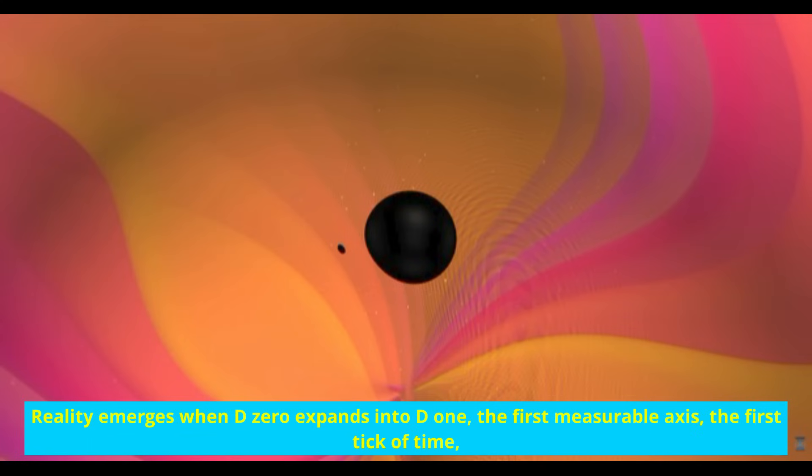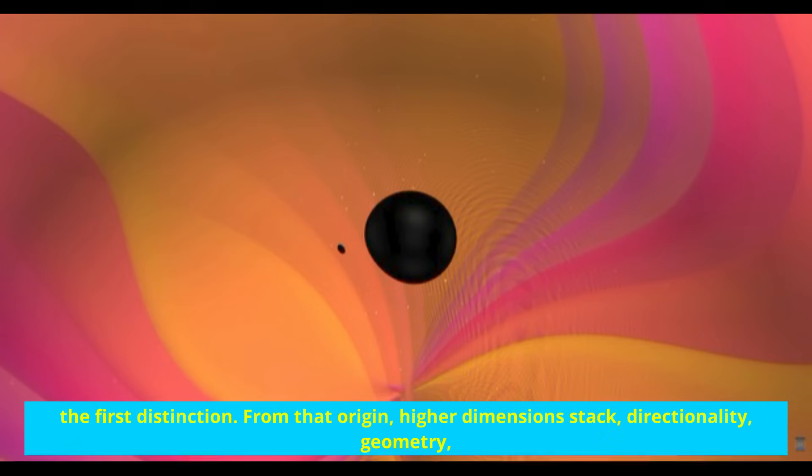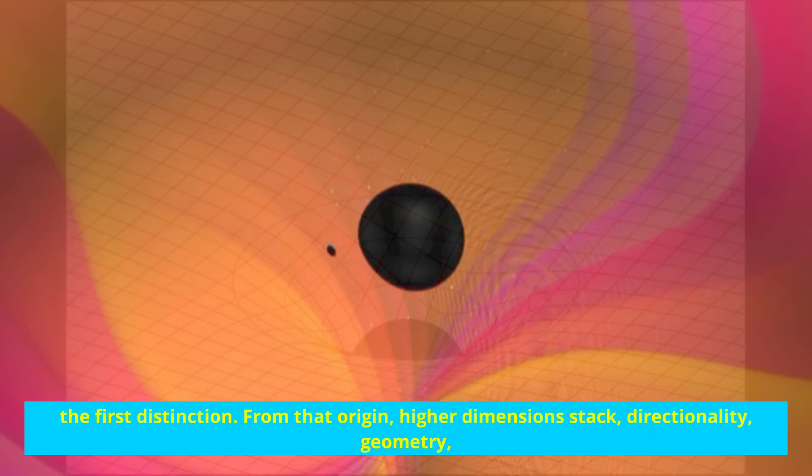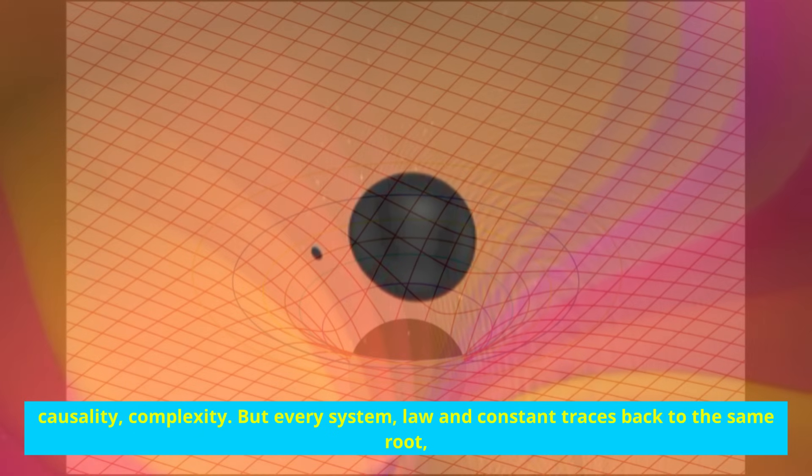Reality emerges when D zero expands into D one, the first measurable axis, the first tick of time, the first distinction. From that origin, higher dimensions stack: directionality, geometry, causality, complexity.